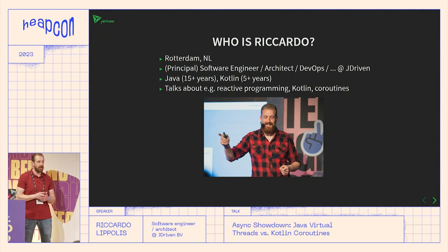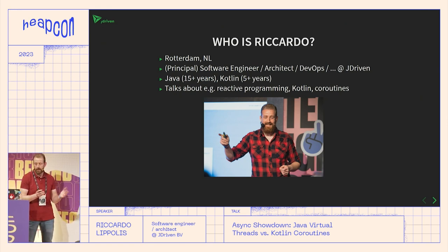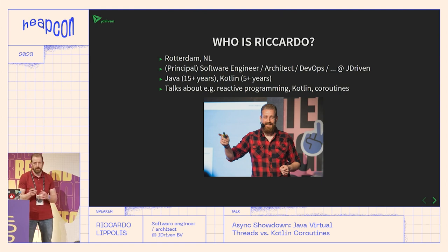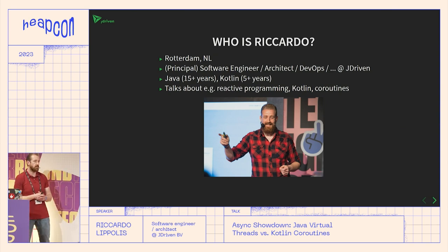For those of you that don't know me, I'm Ricardo Lipolis from Rotterdam, in the Netherlands. My occupation is basically building quality software. I don't care much about the title — call me a software engineer, DevOps engineer, architect, whatever. I've been doing that in Java for more than 15 years and approximately five years ago switched to Kotlin. I've been here at HeapCon in 2019 talking about Kotlin, and I also did talks about reactive programming and coroutines, so talking about virtual threads was a logical next step.